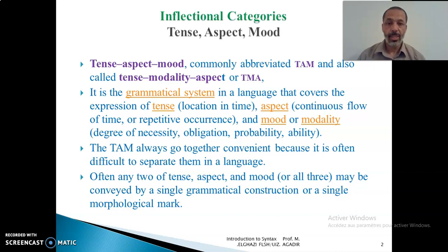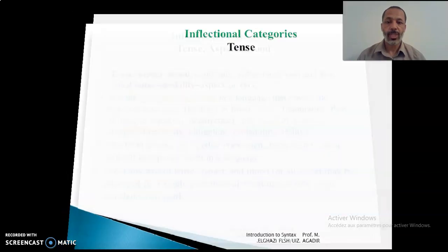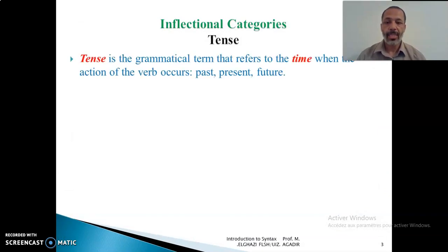Most of the time, especially in English which is a language with weak morphology on verbs, we don't find morphological marks of tense separated from those of aspect, separated from those of mood. Most of the time they go together and are expressed by the form of the verb — by one morphological form.